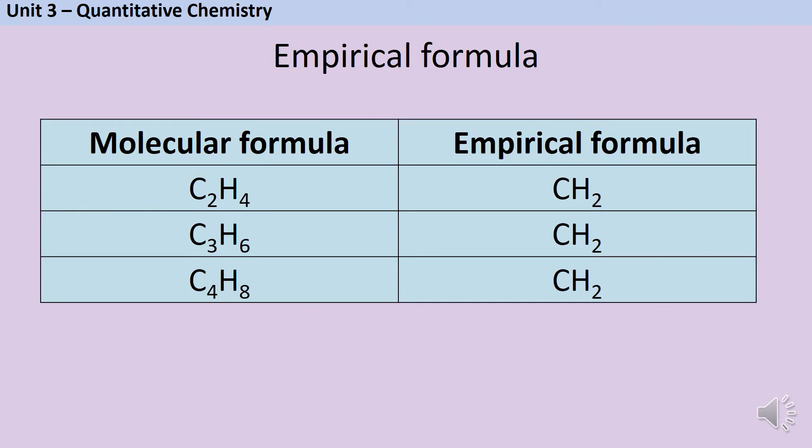If we take the first three alkenes: ethene with a molecular formula of C2H4, propene C3H6, and butene C4H8, all of those molecular formulae can be simplified to a ratio of one carbon to two hydrogen so they all have the same empirical formula CH2. At the end of this video we'll look at how we can work out which one of these compounds we're talking about.